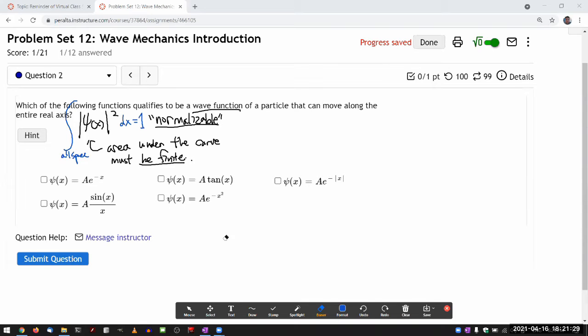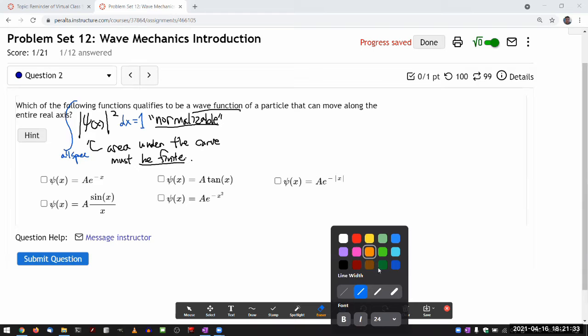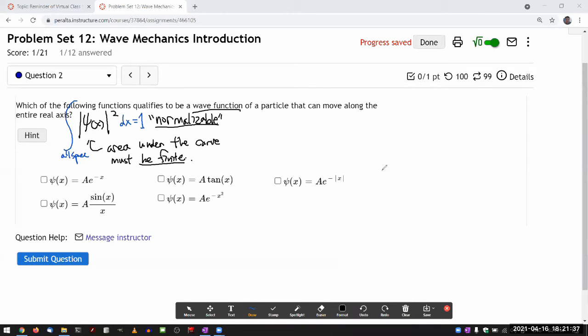So let me start by just plotting the psi of x. In most cases, I think a plot of psi of x will actually give us an idea if it's normalizable or not. And my y axis for now will be psi of x.